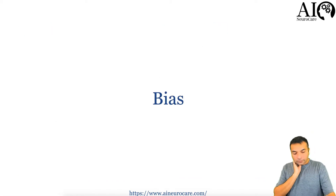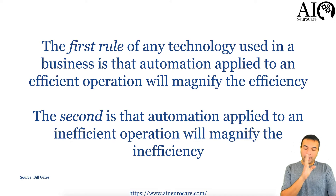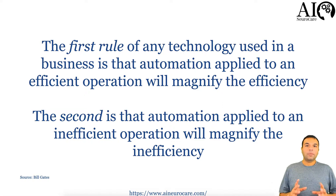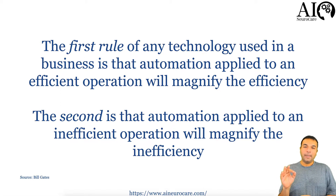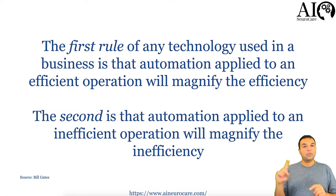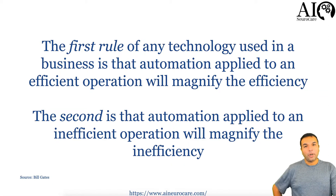Bias is a big issue. To quote Bill Gates: 'The first rule of any technology used in business is that automation applied to an efficient operation will magnify the efficiency. The second is that automation applied to an inefficient operation will magnify the inefficiency.' This is especially true in the era of machine learning. If machine learning misses one polyp on a colonoscopy, that's not one polyp — if applied to 6,000 practices across the United States being used on 600,000 patients, the misses would be enormous.